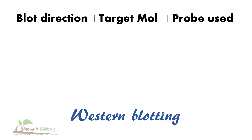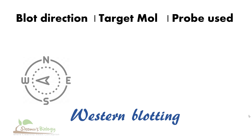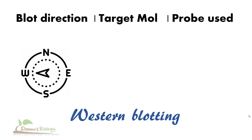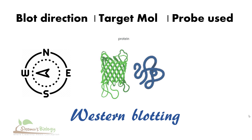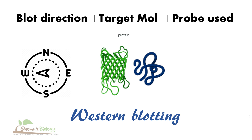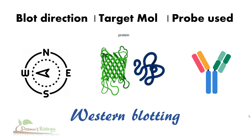Another one is western blotting, the very common one, used to detect the presence of proteins — any kind of protein. We use antibodies, primary and secondary antibodies, as a probe to detect proteins using the western blotting technique.